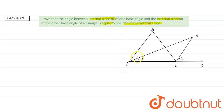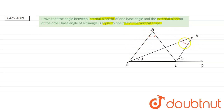The internal bisector of angle B is BE and the external bisector of angle C is CE. We have to prove that the angle between the internal bisector and the external bisector is equal to half of the vertical angle A — that is, angle E is equal to half of angle A.